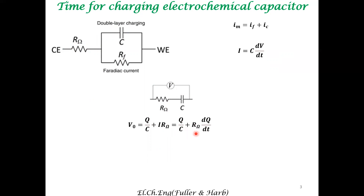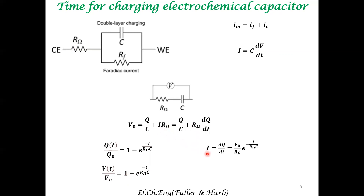By substituting for the potential of the capacitor, we get a simple linear first-order differential equation. This can be integrated, and since Q is correlated to V via the constant C, we substitute Q = C × V to get the expression for current. The current is given by this expression, and what is to be noted is that R×C has a dimension of time. This gives us an estimate of the time constant of relevance to the capacitance — this is the characteristic time constant τ = R_ω × C.